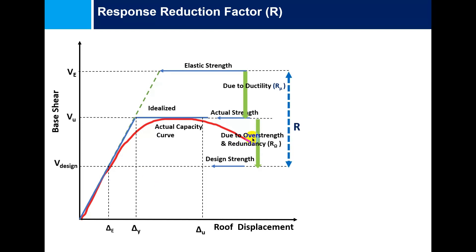This response reduction factor is different for different types of structures and is differently named in different countries and codes. In IS 1893 (the Indian code) it is called the response reduction factor, in ASCE 7-16 it is called the response modification coefficient, and in Eurocode it is called the behavior factor.